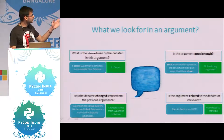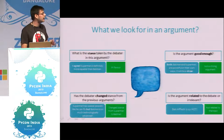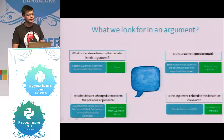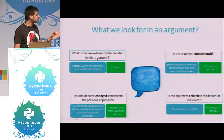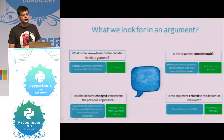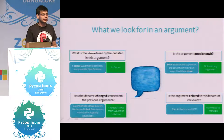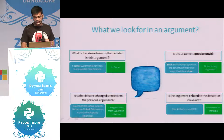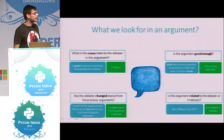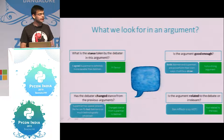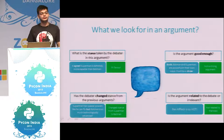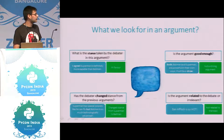We have to determine the stance — whether someone is supporting Superman or Batman. If someone says both are equally powerful, we have to judge whether the argument is good enough, because presenting a neutral argument doesn't really help a debate. We also need to capture when a debater changes their stance during the complete debate — say, from supporting Superman to supporting Batman. And finally, if someone says Ben Affleck is so hot, that argument is not relevant to the debate topic.